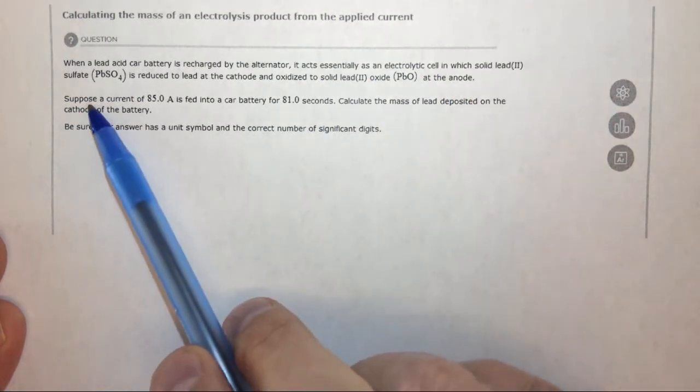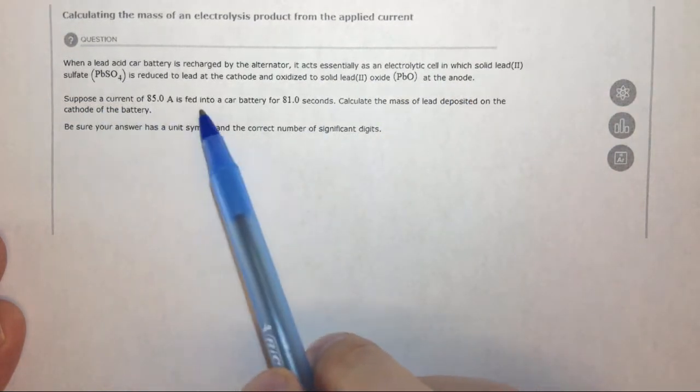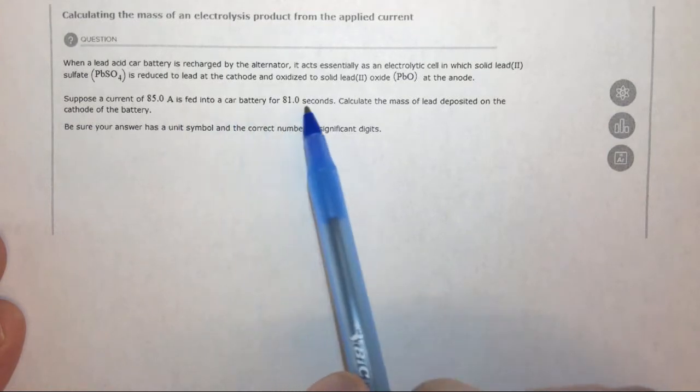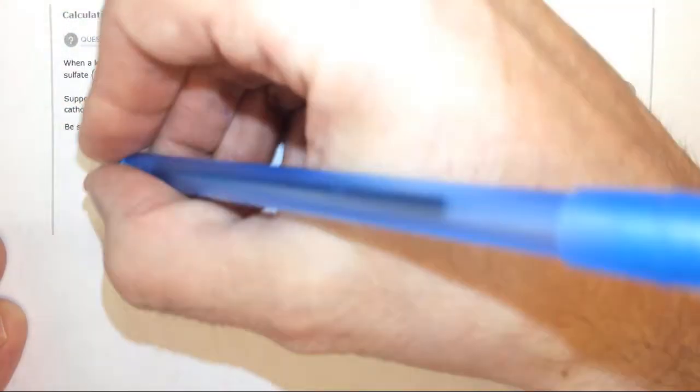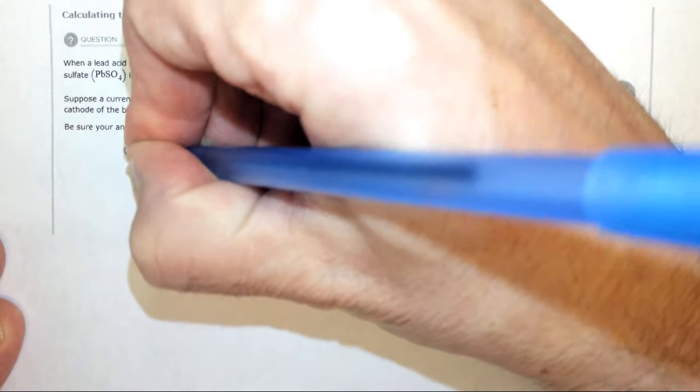So it says, suppose a current of 85 amps is fed into a car battery for 81 seconds. Calculate the mass of lead deposited at the cathode. So what we need to do first of all is figure out what's going on at the cathode, the chemical reaction.